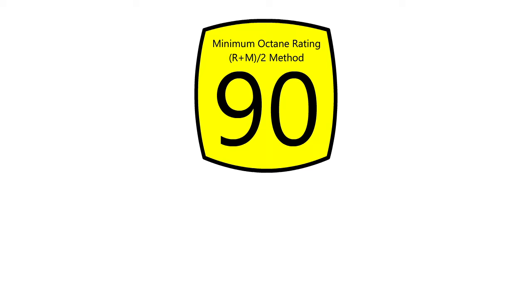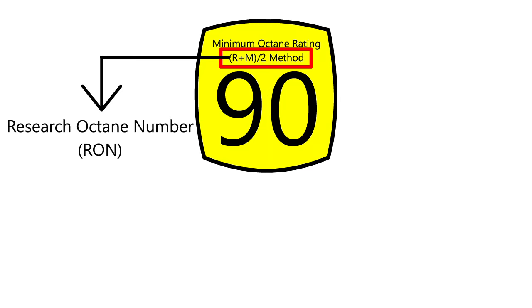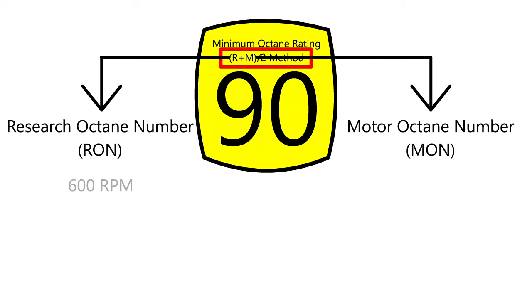To make things a little more complicated, the octane rating at gasoline pumps is the average of two different values, a research octane number and a motor octane number. The RON is determined at a low engine speed of 600 rpm, while the MON is determined at a high engine speed of 900 rpm.